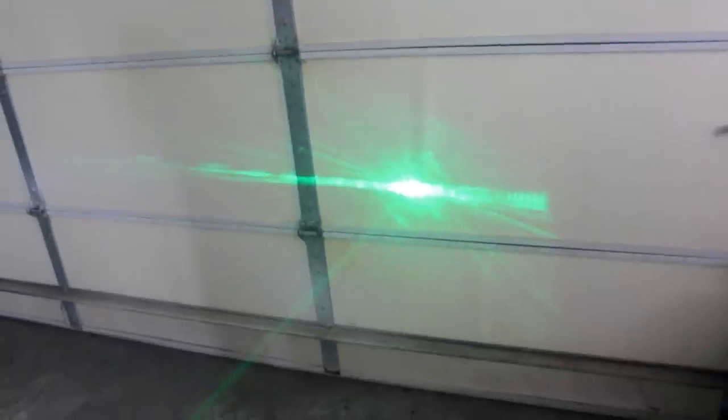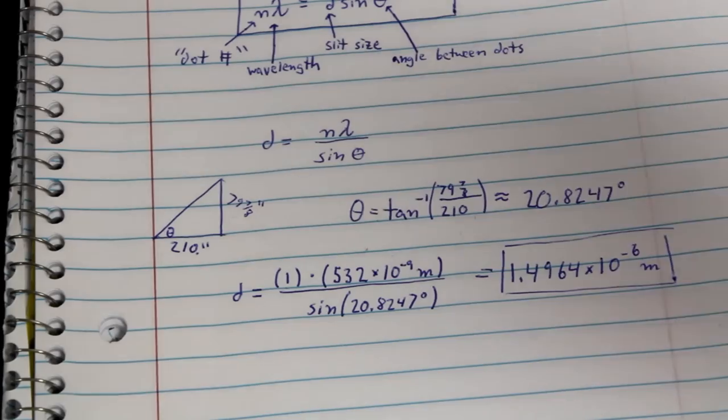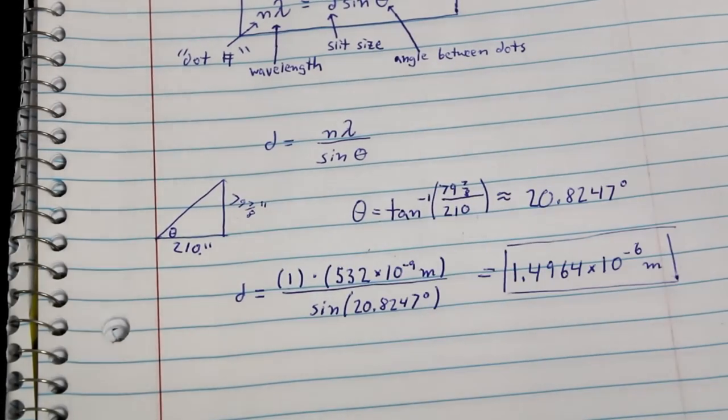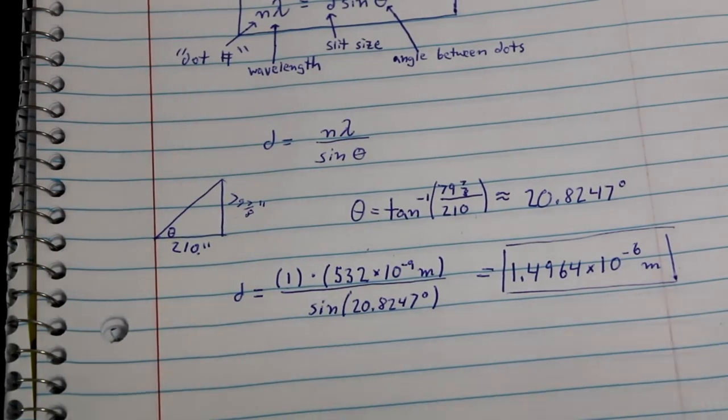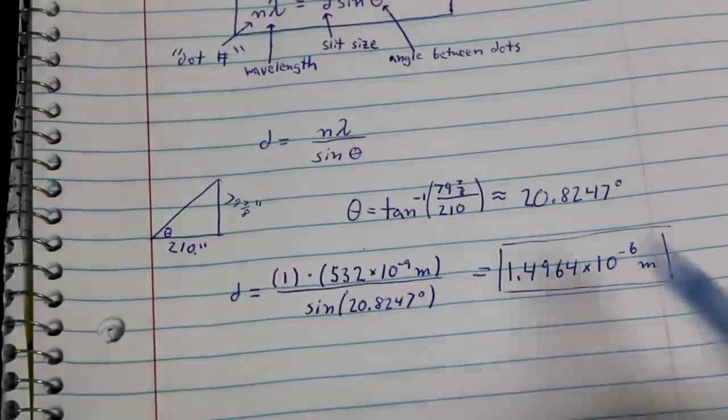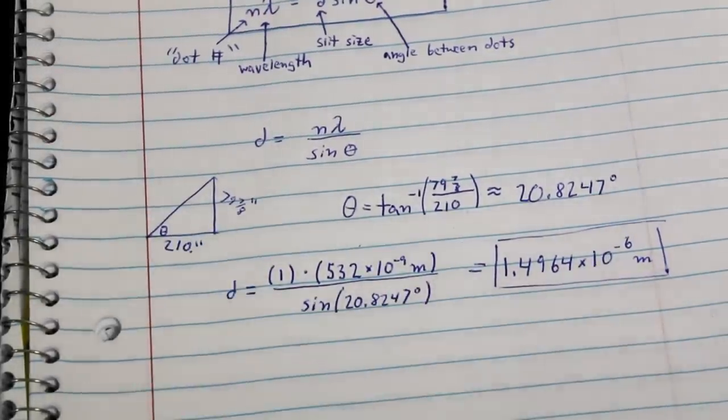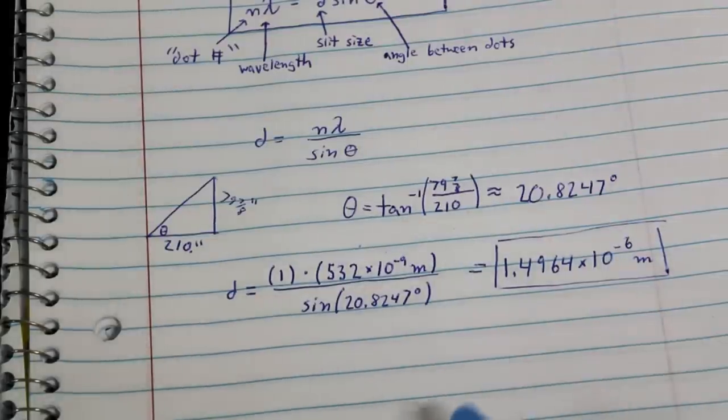So now I just measure the distance from the n equals zero dot to the CD, and then the distance between these two dots. So this is the distance between the n equals zero and the n equals one dot, and then this is the distance from the CD to the n equals zero dot. Then I just use some simple right angle trig to figure out that angle of that triangle, and then I just plug into that formula there.